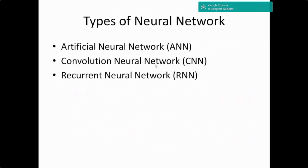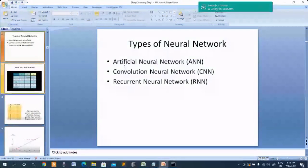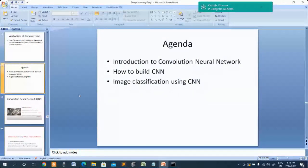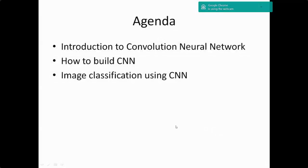We also covered the types of neural networks: the artificial neural network, convolutional neural network, and recurrent neural network. Today I will be discussing the convolutional neural network — what convolution means, how it works, and things like that. The agenda for today's session is: introduction to convolutional neural network, how to build a CNN, and a hands-on image classification session using CNN.